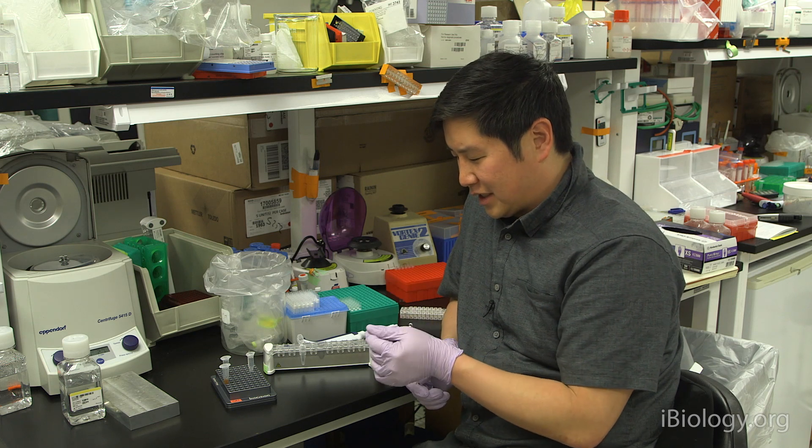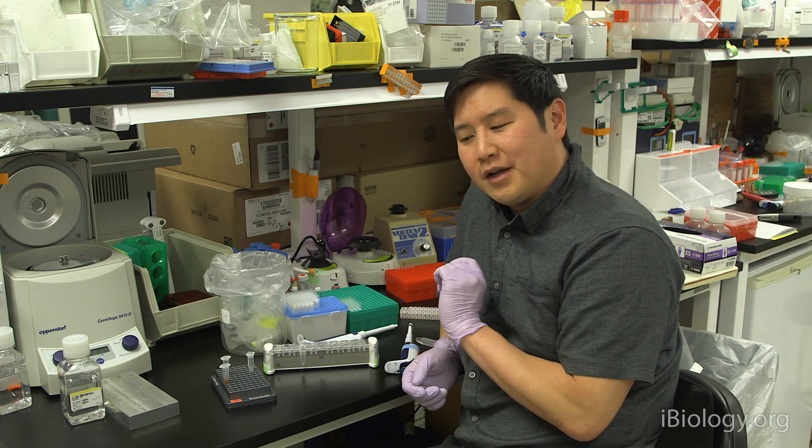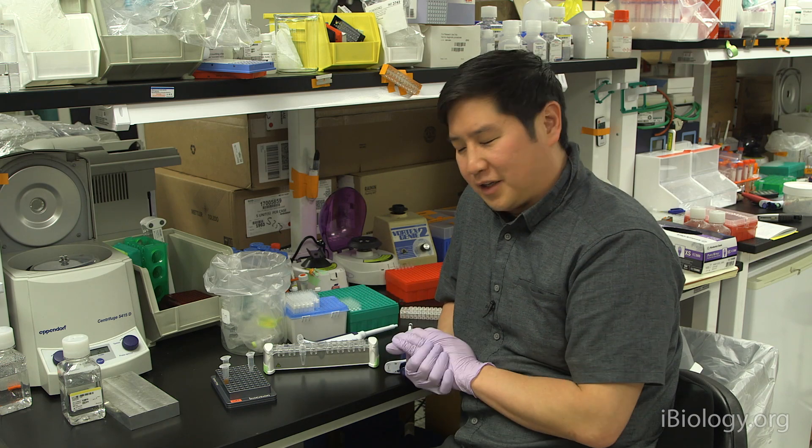So if you see them starting to turn this kind of a dry, cakey-brown color, you'll want to pull them off the magnet and go directly to elution.